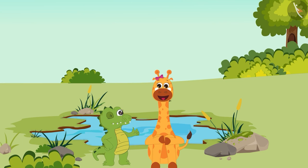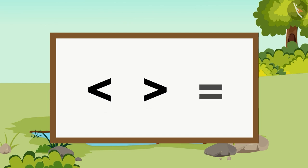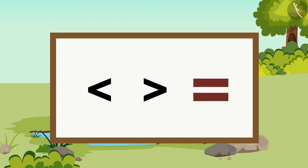Children, didn't you also enjoy watching this game? Come, let us also play this game. The 3 symbols we use to compare numbers are these 3. This is the lesser than symbol. This is the more than symbol. And this is the equals to symbol.